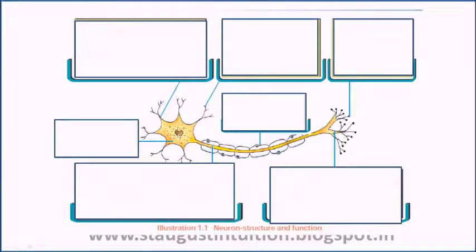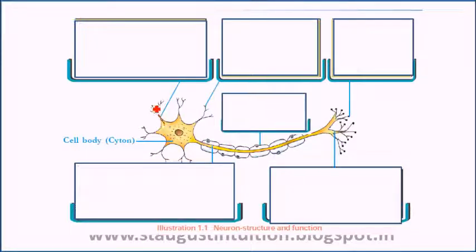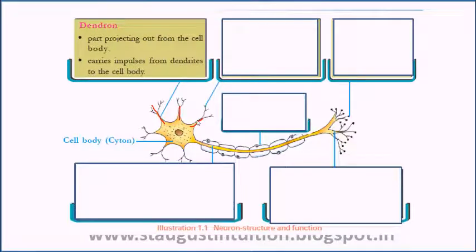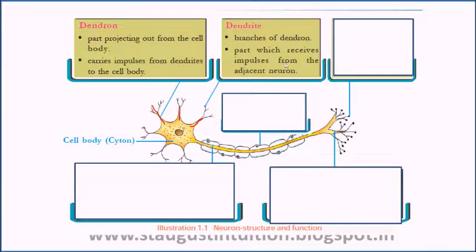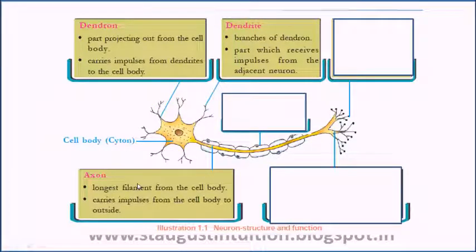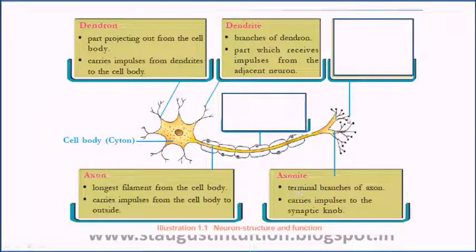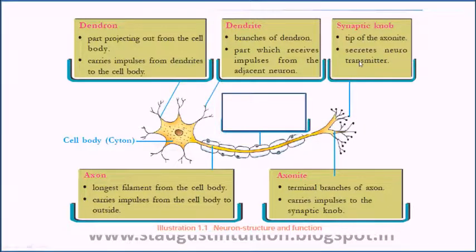This is the cell body. The main branch is the dendron — this is the dendron with its dendrites. Then this is the cytone, and from the cytone comes the axon. The axon has branches, and at the tip is the synaptic knob.